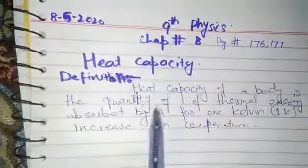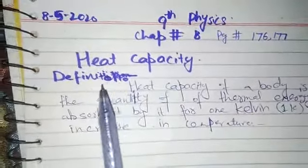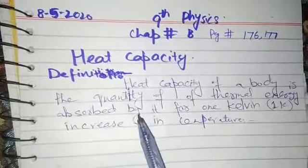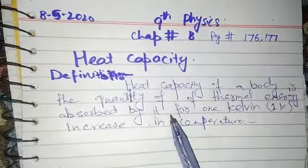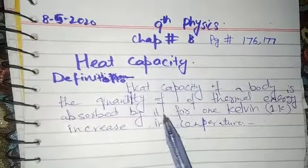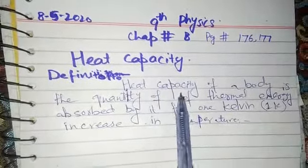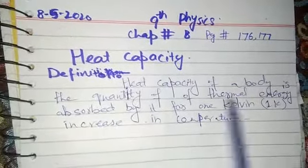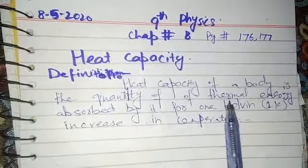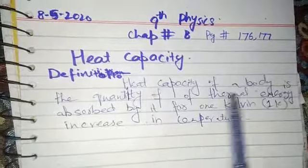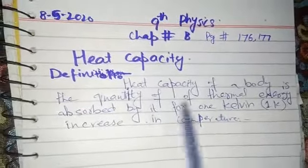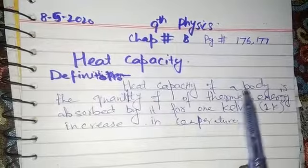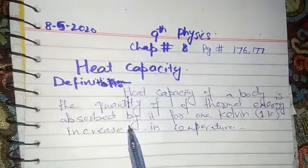In the last lecture we read about specific heat capacity. Specific heat capacity is the heat given to a quantity, and heat capacity is the quantity of thermal energy absorbed by the object.